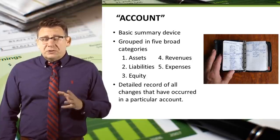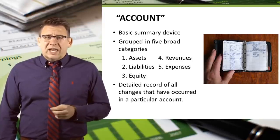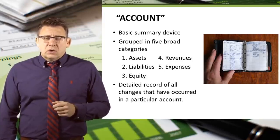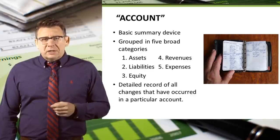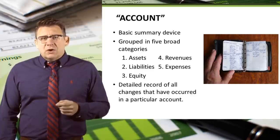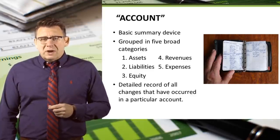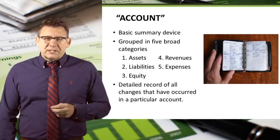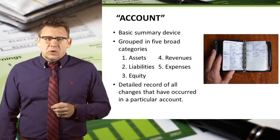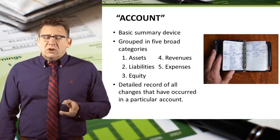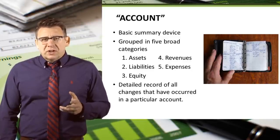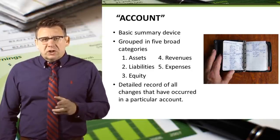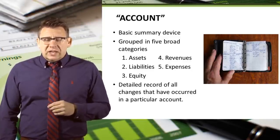Accounts are grouped into five broad categories, which include assets, liabilities, equity, revenues, and expenses. We will learn how financial data moves from the journal into the account later.